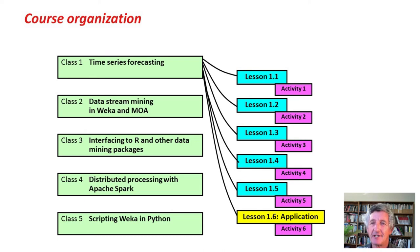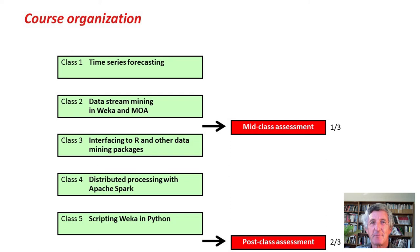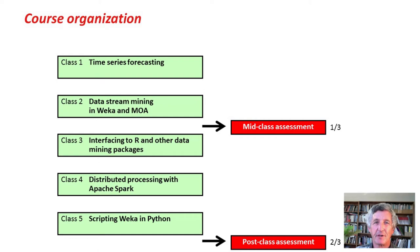The last lesson of each class is a particular application, where we show you how WEKA has been used in a real application. In order to get a certificate, you need to do the mid-class assessment and the post-class assessment, which are worth one-third and two-thirds of the credit. The activities are not required for assessment, but we strongly recommend you do them, as this is where you're going to be doing your real learning.